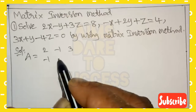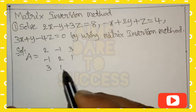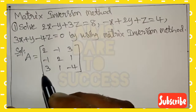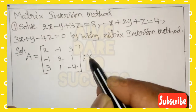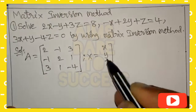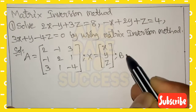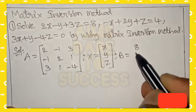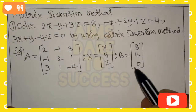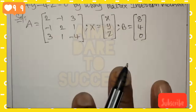My dear students, first of all write the A matrix — that means the x, y, z coefficients from the given 3 equations: 2, minus 1, 3 from the 1st equation; minus 1, 2, 1 from the 2nd equation; 3, 1, minus 4 from the 3rd equation. Then write X as the column vector of variables x, y, z. Next, write B as the constant values from the right side: 8, 4, 0.